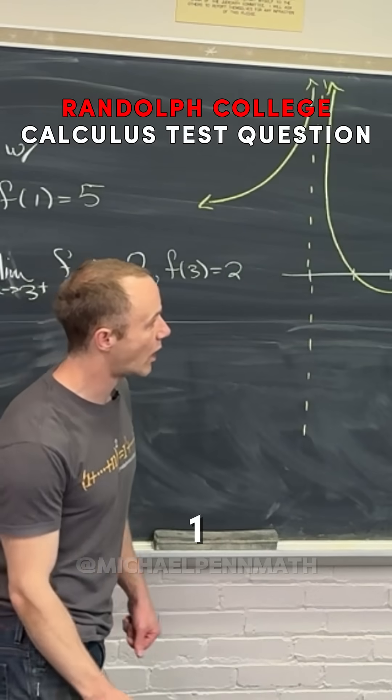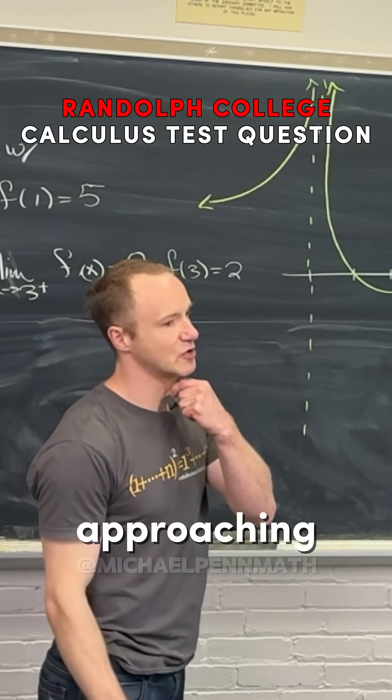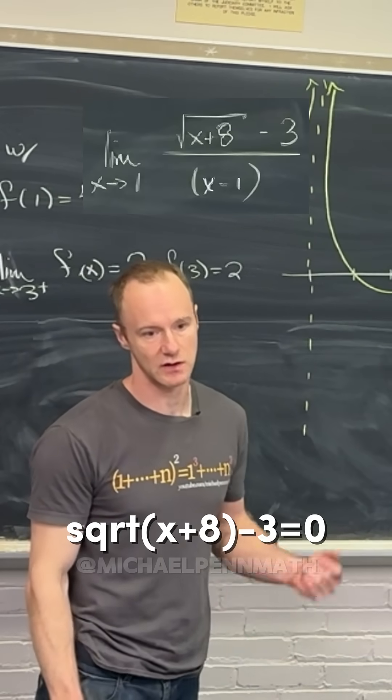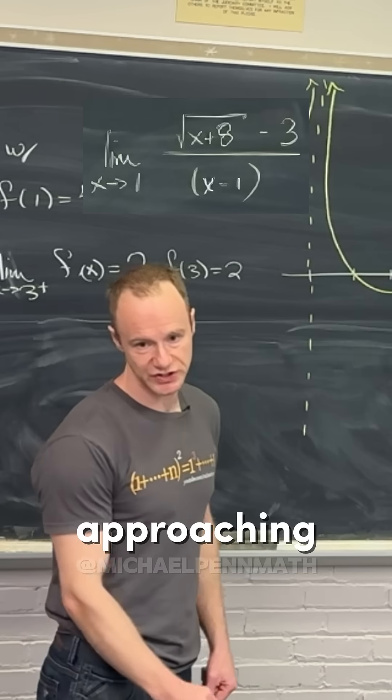Observe as x is approaching 1, the numerator is approaching the square root of 9 minus 3, which is 0, and the denominator is also approaching 0.